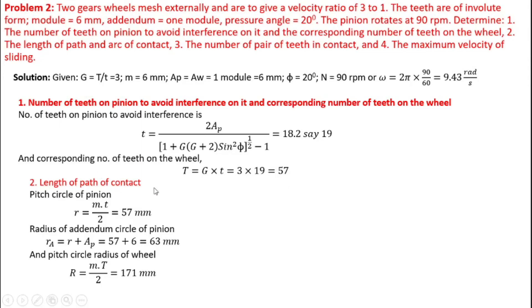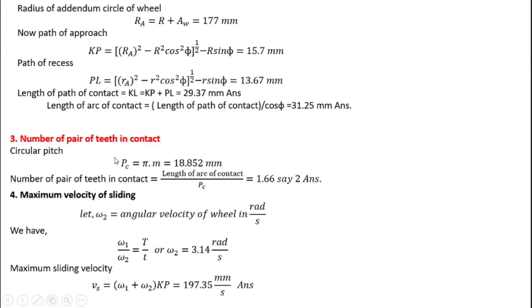For the length of path of contact, we first find the pitch circle radius. The pitch circle radius of the pinion is mt divided by 2, which gives 57 mm. The radius of the addendum circle of the pinion equals the pitch circle radius plus the addendum height, which is small r plus AP. Similarly, the pitch circle radius of the wheel is MT divided by 2, which gives 171 mm, and the radius of the addendum circle of the wheel is capital R plus AW.